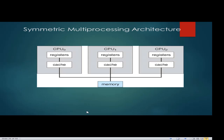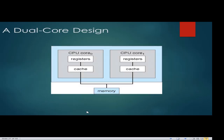A dual-core design shows two CPUs; quad-core means four CPUs. The more CPUs responsible for processing data, the faster the expected completion of instructions — meaning more cores increase the speed of processing information.